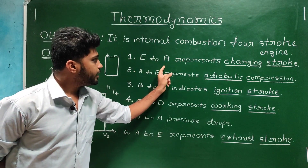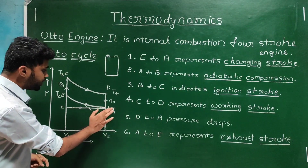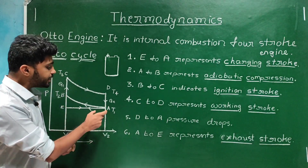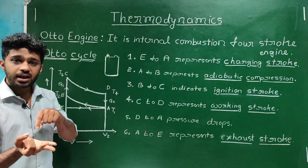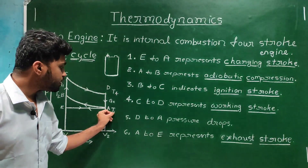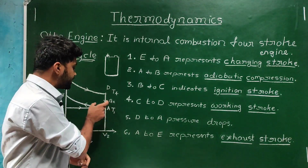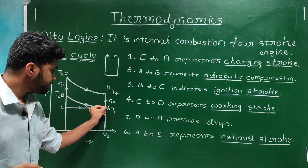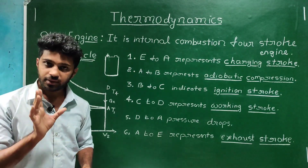In the graph, E to A represents the charging stroke. The cylinder is filled with petrol and air vapors. The temperature at this point is T1 and the volume is V2.